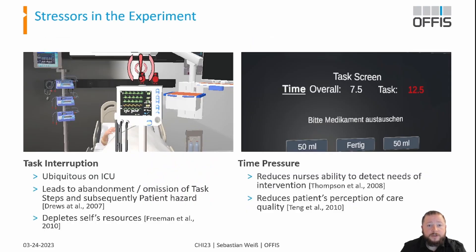The choice of virtual stressors, of which we wanted to measure the effect, is based on a literature review. After clustering the results from 21 publications, it became obvious that high job demands was one of the most cited reasons for nurses to be stressed. From this cluster, we selected task interruption and time pressure during a focus group with six experts. The reason why these stressors were selected are their ubiquity and the negative effect they have on both nurses and patients.